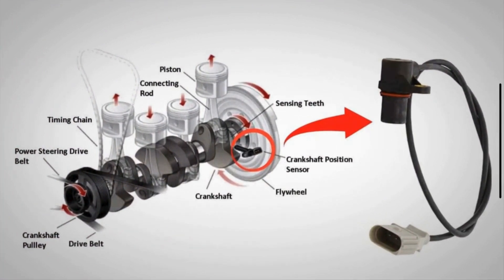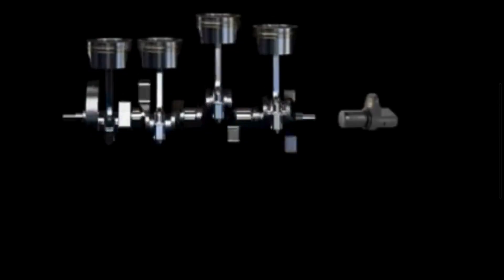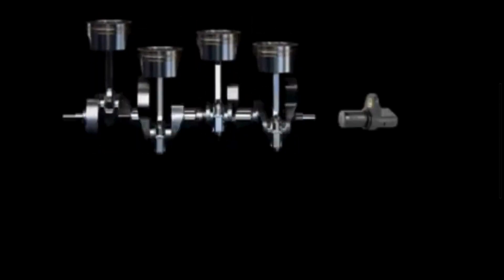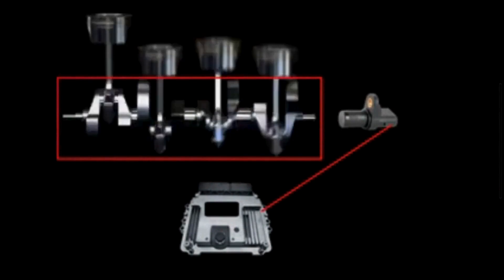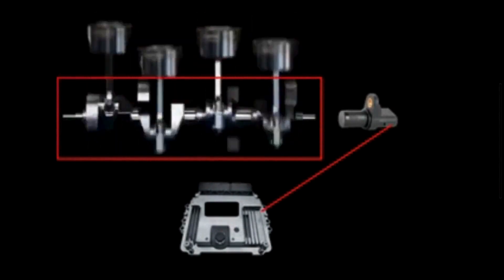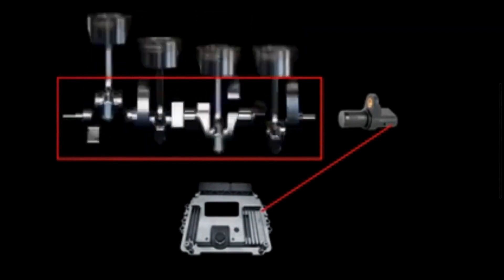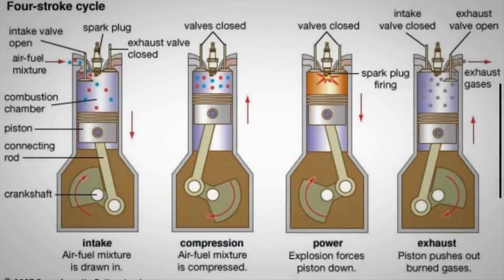Let's understand the function of the crankshaft position sensor. The crankshaft position sensor provides precise information about the crankshaft's position and speed to the engine control module. This data is essential for synchronizing the timing of the ignition spark and the fuel injection, ensuring optimal engine performance.